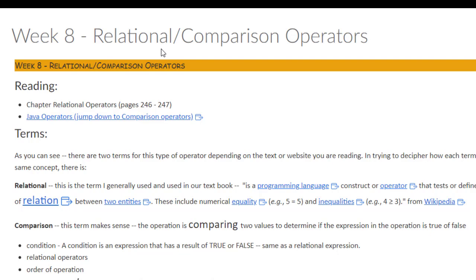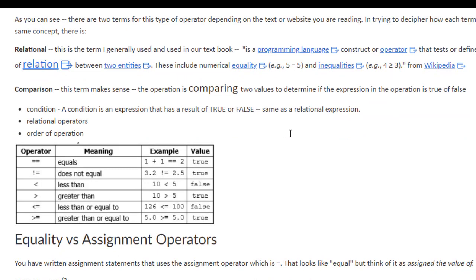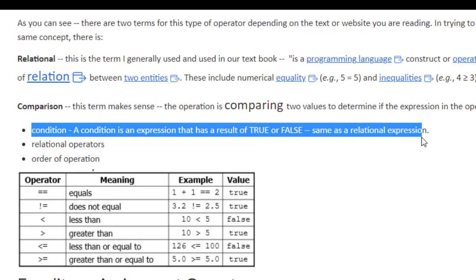Elsewhere, you might hear them called comparison operators. A relational operator compares two values and returns either true or false, depending on what operator is used. This is also known as a condition in our if statement or in our loops. It is the test that will determine whether we're going to loop again or exit the loop, or the condition that is used to decide which way you will be branching in your if structure.